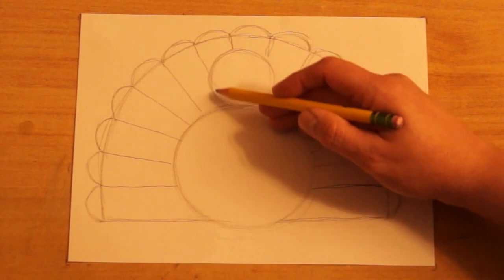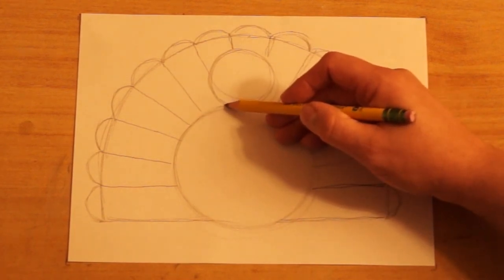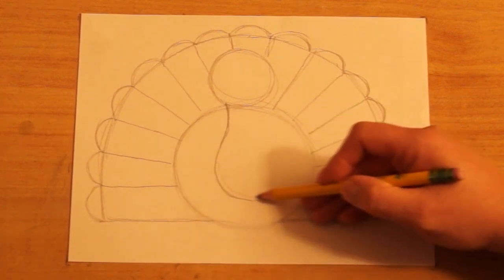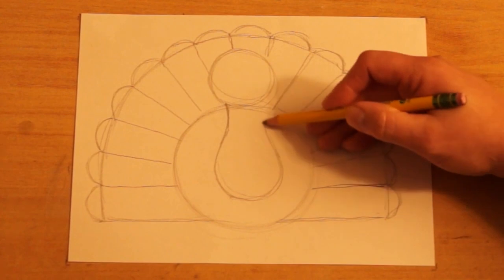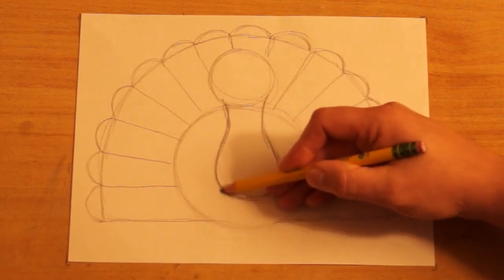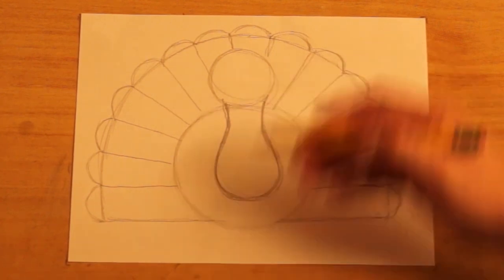Now I want to make the turkey's neck. I'm going to start up here by the head. I'm going to make a line that curves down and around for the base of the neck, the bottom of the neck. And then it's going to curve back in and up to the head. Just like that.